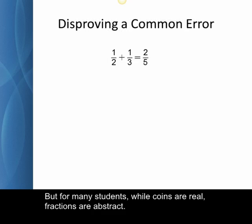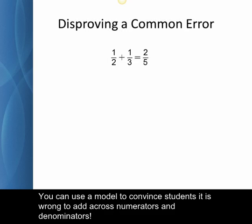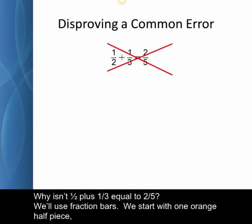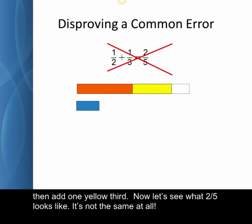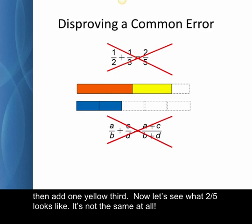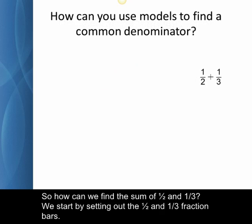But for many students, while coins are real, fractions are abstract. You can use a model to convince students it is wrong to add across numerators and denominators. Why isn't one-half plus one-third equal to two-fifths? We'll use fraction bars. We start with one orange half piece, then add one yellow third. Now let's see what two-fifths looks like. It's not the same at all.